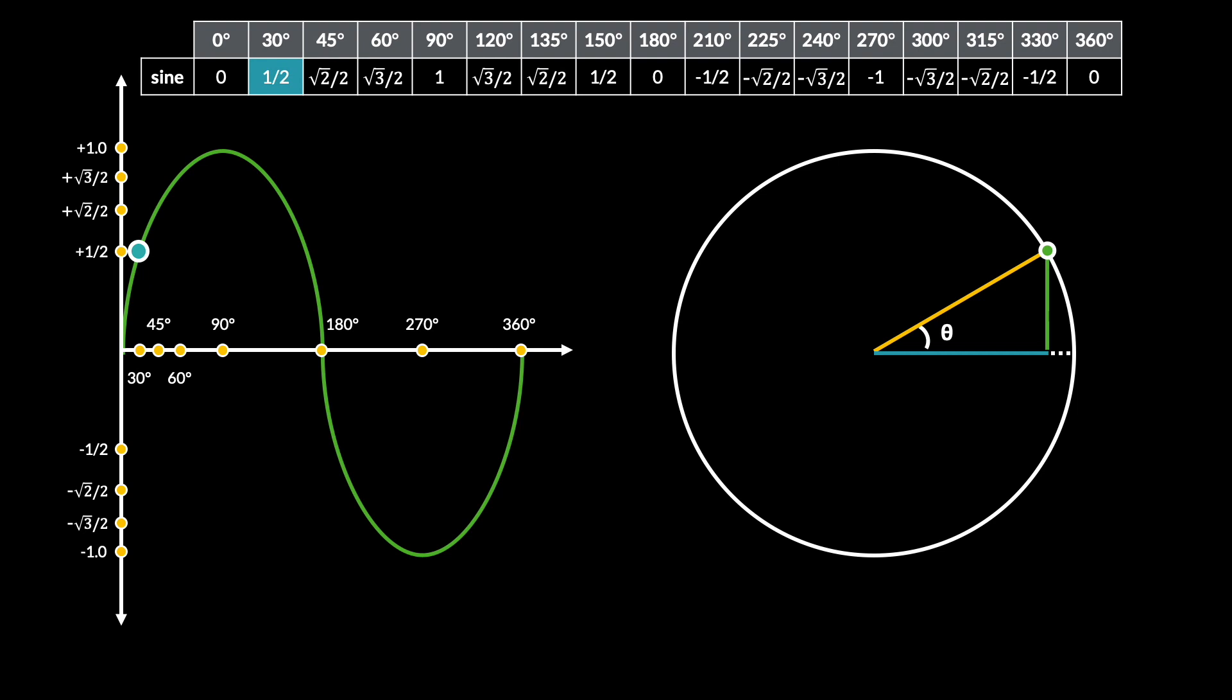So at 30 degrees the value of sine sits at about 0.5 which moves to root 2 by 2 at 45 degrees to root 3 by 2 at 60 degrees and it becomes 1 at 90 degrees. This is because the yellow line the hypotenuse becomes equal to the opposite.